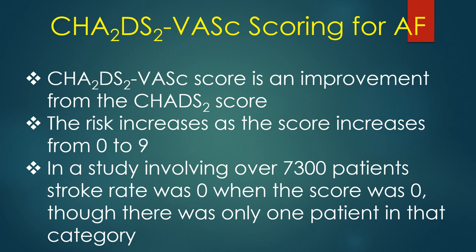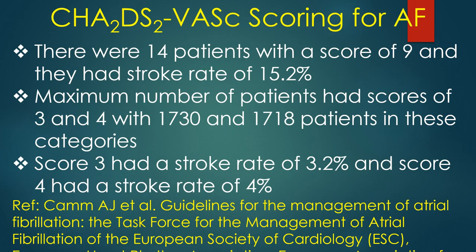CHADS-VASC score is an improvement from the CHADS2 score — the risk increases as the score increases from 0 to 9. In a study involving over 7,300 patients, stroke rate was 0% when the score was 0 (though only 1 patient was in that category). There were 14 patients with a score of 9, who had a stroke rate of 15.2%. Maximum numbers of patients had scores of 3 and 4, with stroke rates of 3.2% and 4.0% respectively.